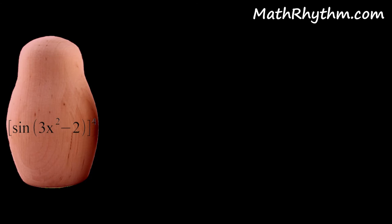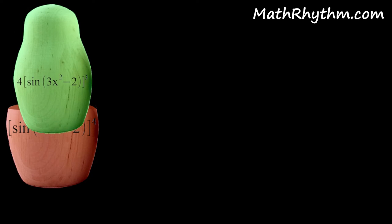Now we can see that the outside function is in fact that power of 4. As with the power rule before, we bring the 4 down in front, reduce that power to a 3, and leave the inside function alone.